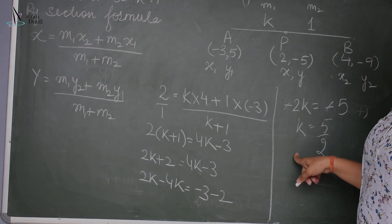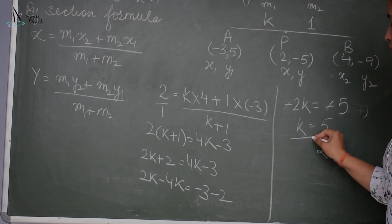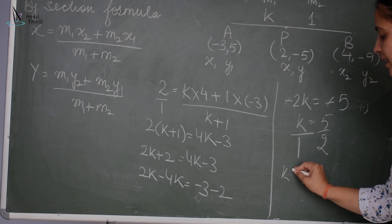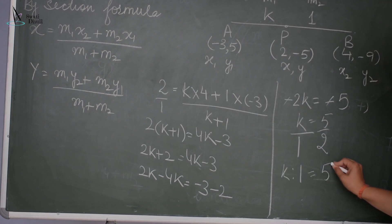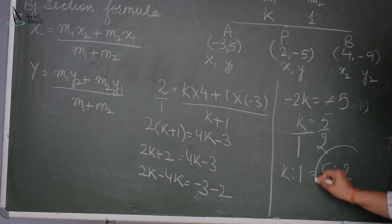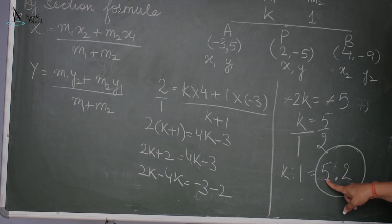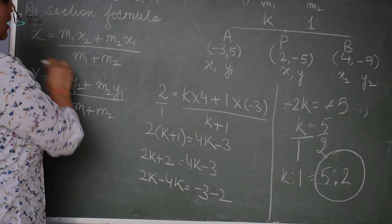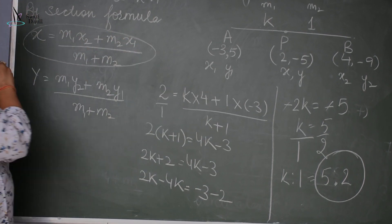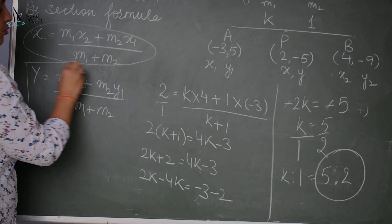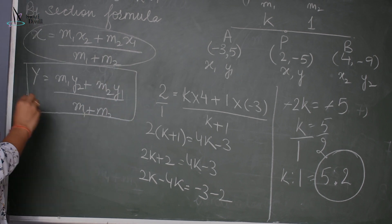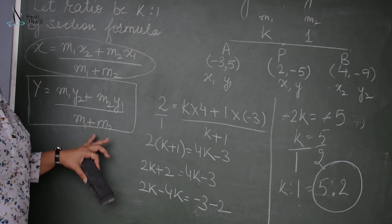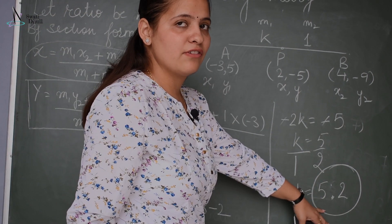Since k = 5/2, that means k:1 = 5:2. So the ratio is 5:2. Similarly, if you substitute the values in the y-coordinate formula, you will get the same ratio. You can try it on your own and you will get the ratio as 5:2.